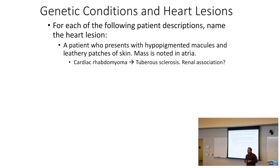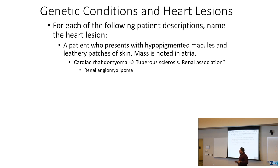What's the renal lesion in tuberous sclerosis? It's three things: renal, angio (blood vessel), myo (muscle), lipoma (fat) — renal angiomyolipoma.